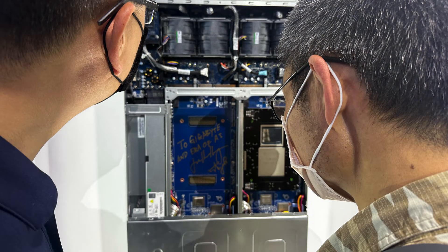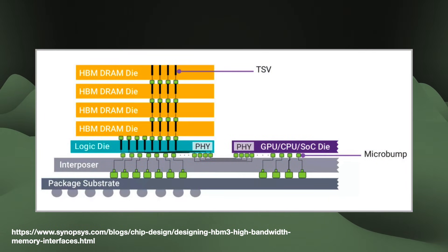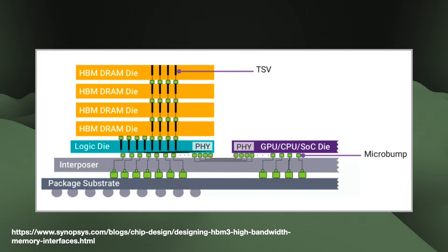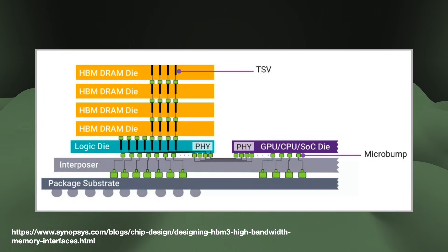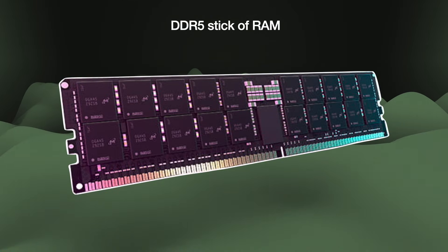The JEDEC standard defines for the manufacturer how the HBM system has to work and what features they need to support, but it does not specify how the vendor might structure the stack nor things outside the stack. This allows various HBM vendors to offer a differentiated product. HBM buyers can put the HBM stack right on top of their CPU or GPU die, or do what AMD and Nvidia did — add a silicon interposer to connect multiple HBM die stacks to the GPU like a PCB. JEDEC also administers other standards like DDR, LPDDR, and GDDR.